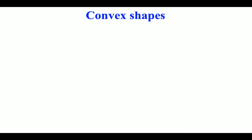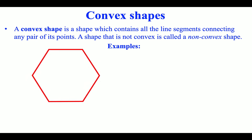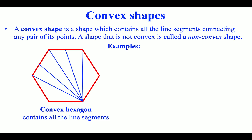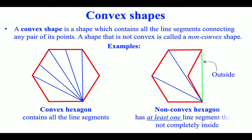Convex shapes: a convex shape is a shape which contains all the line segments connecting any pair of its points. A shape that is not convex is called a non-convex shape. For example, a convex hexagon contains all the line segments, while a non-convex hexagon has at least one line segment that is not completely inside.